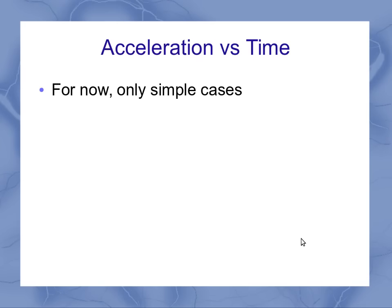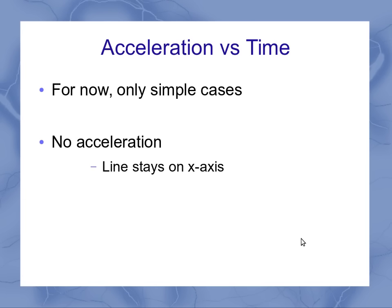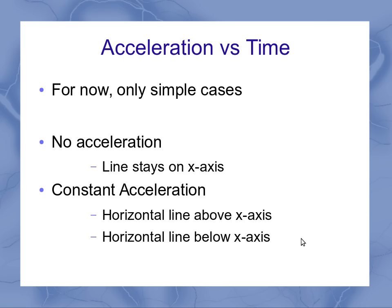Now we've got acceleration versus time. In this course, we're only going to deal with simple examples. For no acceleration, your line stays on the x-axis. For constant acceleration, you get a horizontal line either above the axis for positive or below the axis for negative acceleration. You can picture this without even having to plot it.